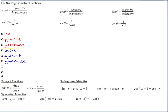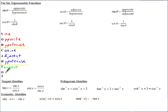And finally, the TOA part: T stands for tangent — we abbreviate tangent with three letters, but it's spelled out like that. Tangent is the O for opposite over the adjacent.